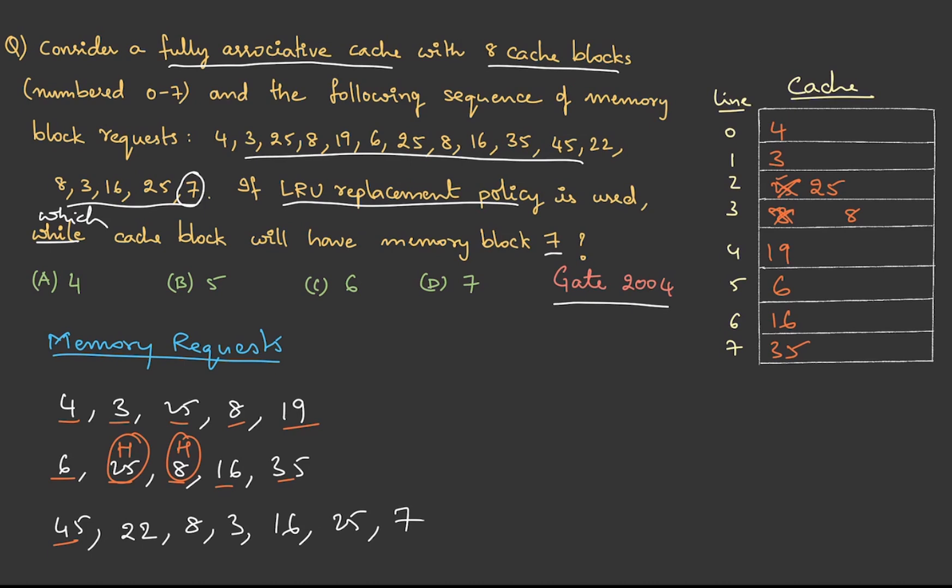Now 45 has to be replaced with the least recently used. In this case, the least recently used is 4, so let me write it over here. Then 22. Then 8, which is available, so this is a hit. Let me write it to the right.